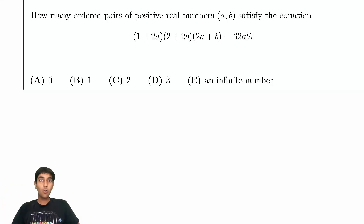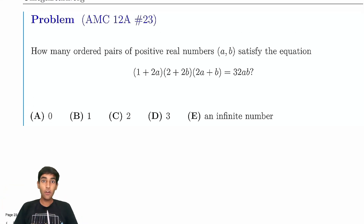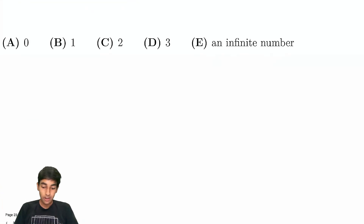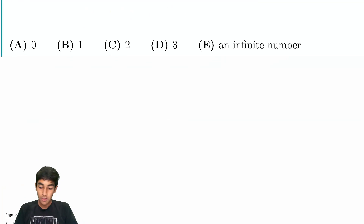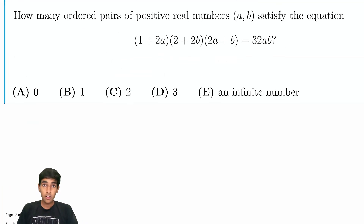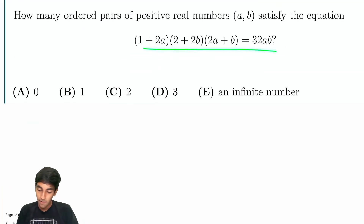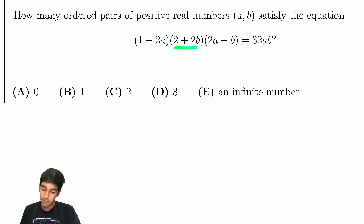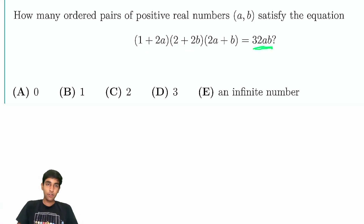Let's tackle this cool equation from the AMC-12. How many pairs of ordered real numbers satisfy this? The first thing you can immediately see is we've got a factor of 2 here and a factor of 2 here.